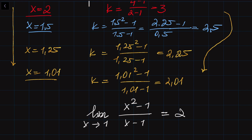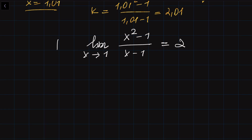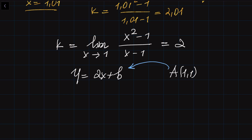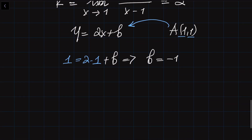This is what we call the limit and this is why we need the limit — in order to find the slope of the tangent line where it is impossible to find the slope using just one point. Now we can find the equation of the tangent line because we know the slope is 2. So the equation of the tangent line is going to be 2X plus B. We know this line passes through point (1, 1), so plugging in: 1 equals 2 times 1 plus B, which gives B equal to minus 1.